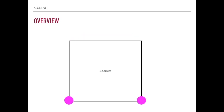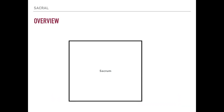Now let's talk about the little pink structures down here. These are the inferior lateral angles, also known as the ILA. When I say ILA, I'm talking about the inferior lateral angle — there's one on either side of the sacrum, both on the right and the left.